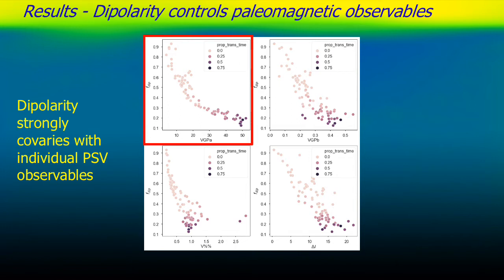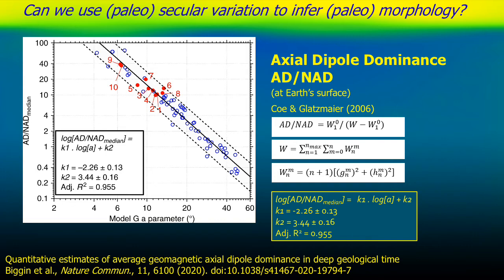This strong relationship prompted us to ask: can we use VGP_A or equatorial dispersion to actually predict or characterize something about Earth's field? Andy Biggin explored this, asking whether we can use model G to infer something about field morphology. He uses a different formulation of dipolarity — the ratio of the axial dipole to the non-axial dipole terms at Earth's surface at an instantaneous time step, taking the median over the entire interval, which he terms axial dipole dominance. When we do this comparison we get a really nice power-law relationship between VGP_A and axial dipole dominance.